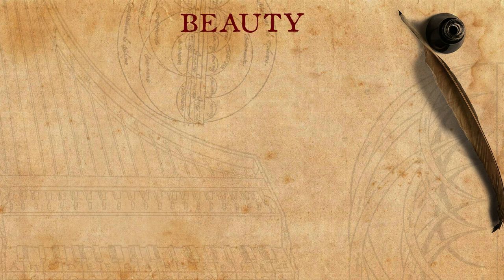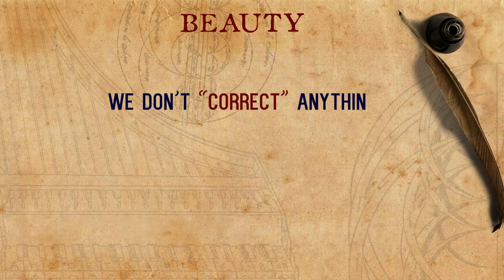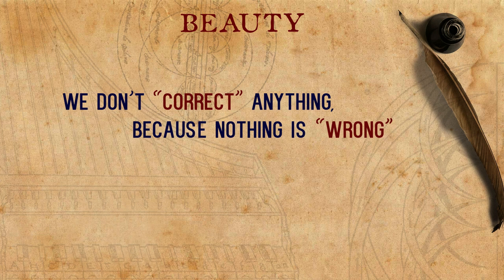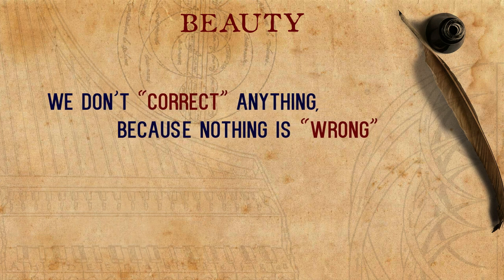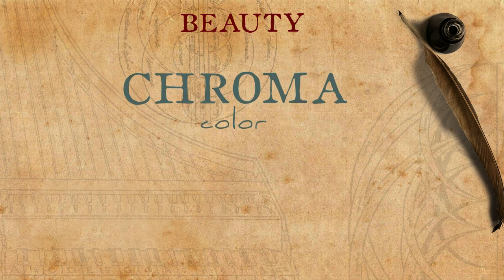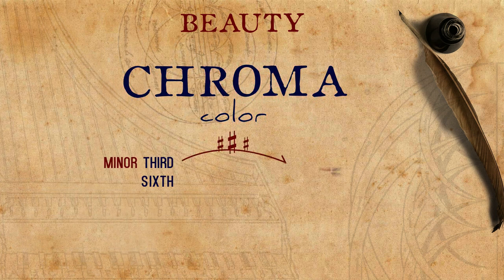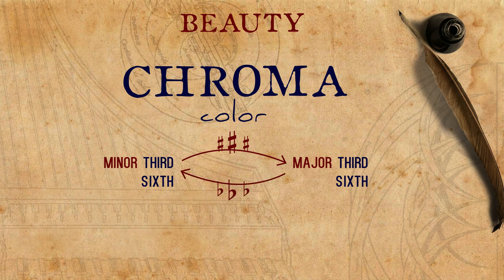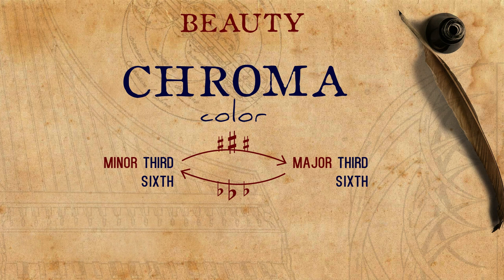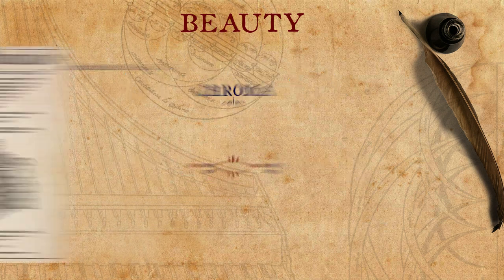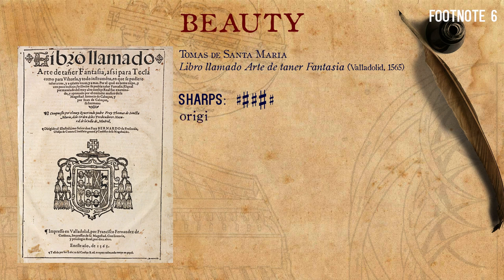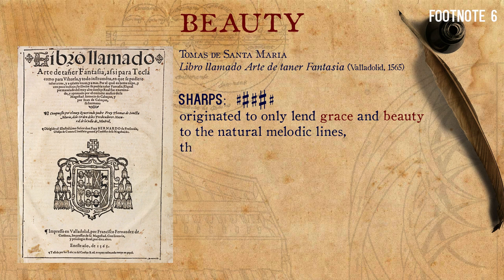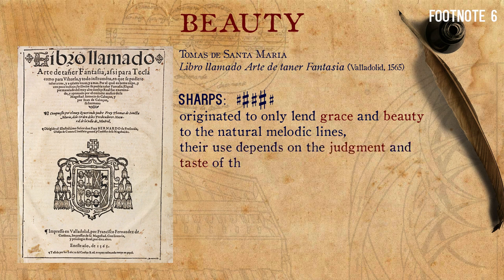When altering notes for beauty's sake, we don't correct anything, because nothing is wrong — there are no bad intervals that need to be perfected. In such alterations, only the chroma, the color of the notes, changes. A minor third or sixth might become major, or a major third or sixth might become minor — it is just an alteration of one version of a consonance to another. Referring specifically to sharps, Santa Maria wrote that they originated to only lend grace and beauty to the natural melodic lines, and that their use depends on the judgment and taste of the performer.